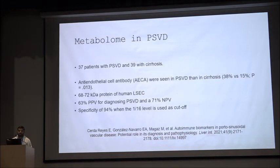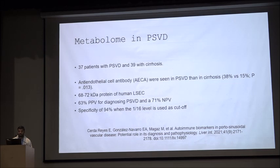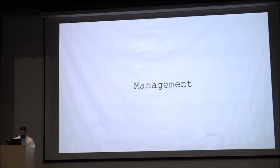Regarding biomarkers in PSVD, the Garcia Pagan study of 37 patients found anti-endothelial cell antibodies against liver sinusoidal endothelial cells. These were positive in 38% of patients, with a positive predictive value of 63% and negative predictive value of 71%.